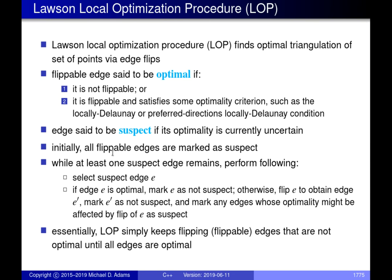We loop, and each time through the loop we remove one element from the suspect edge list. We check whether the edge is optimal using our criterion — the locally Delaunay test for standard Delaunay, or the preferred directions test otherwise. If it is optimal, we do nothing. If it is not optimal, we perform an edge flip. Flipping the edge may cause previously optimal edges to become suspect, since part of the triangulation has changed.